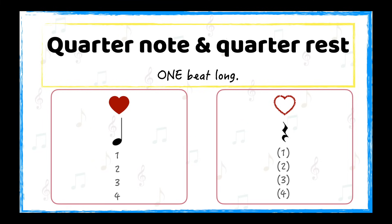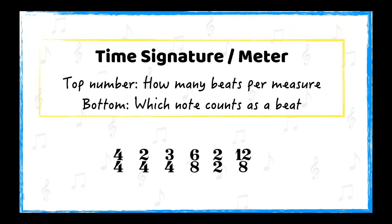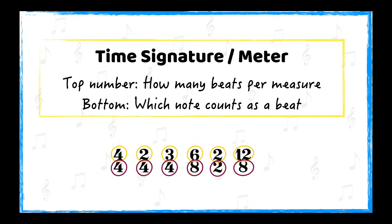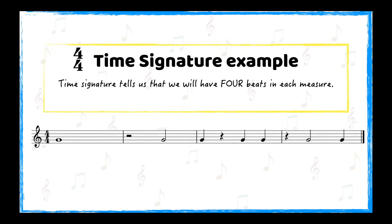Before we start writing our counting in music, we need to understand our time signature. The time signature tells us how many beats there are in a measure. When we know how many beats there are in a measure and understand our note values, we can start counting. Remember that our top number in the time signature tells us how many beats we receive per measure, and the bottom number tells us which note counts as a beat. Our first example uses a 4/4 time signature, which indicates that there are 4 beats in the measure. We will use numbers 1, 2, 3, and 4 to write in the counts.